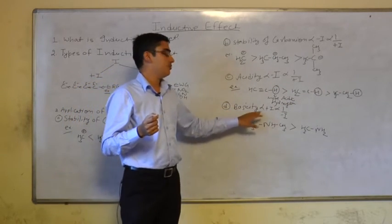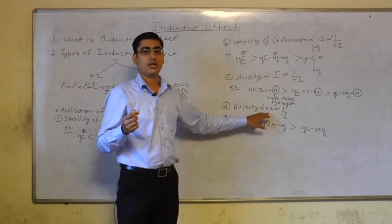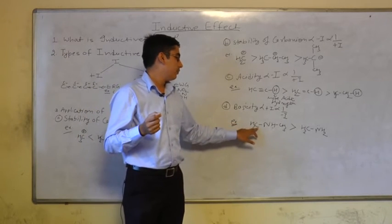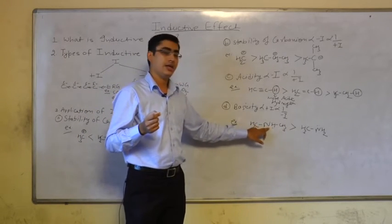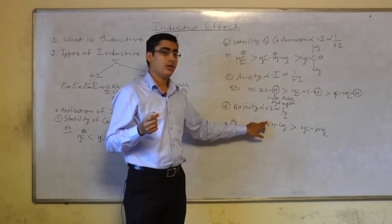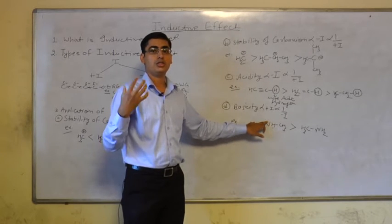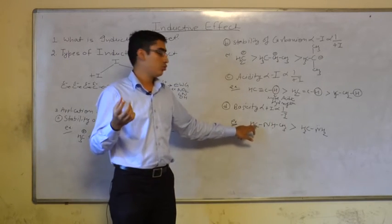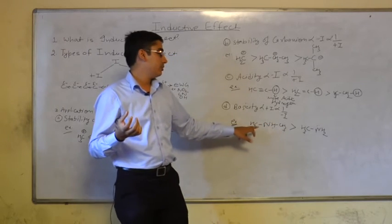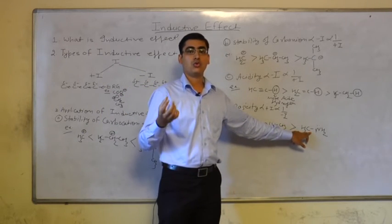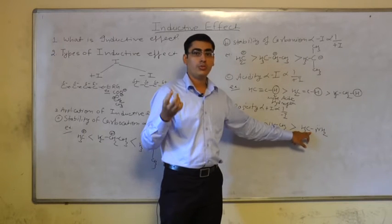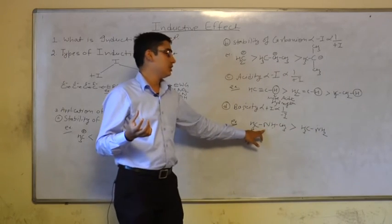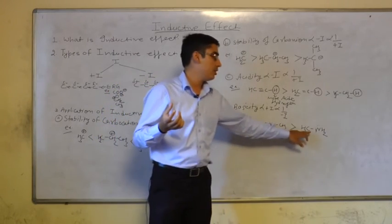Basicity is proportional to plus I effect and inversely proportional to minus I effect. If we add 2 CH3 groups to a secondary amine, the lone pair present on the nitrogen atom will be donated more easily because the electron density is increased by 2 methyl groups. With only 1 methyl group in the primary amine, the electron density increase is less. So secondary amine is more basic than primary amine.